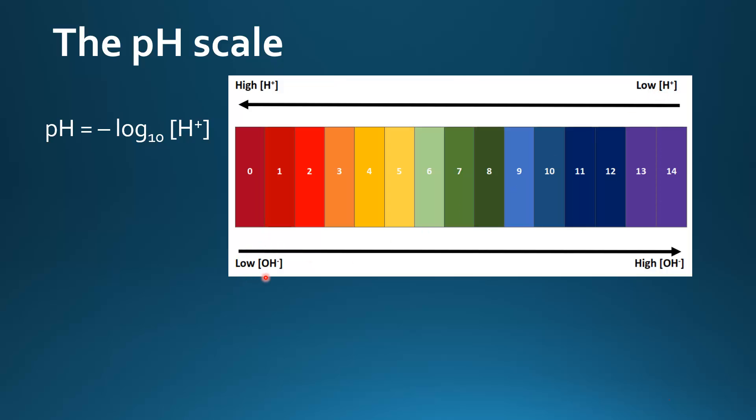If we look in terms of OH negative ions, acids have low concentrations of OH negative ions, and bases have high concentration of OH negative ions.